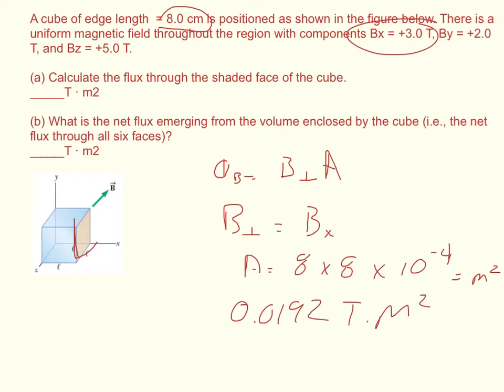Now what is the net flux emerging from the volume enclosed by the cube? So we know if we got something coming in this side, we have to have something that came in over here. So what came in on this side is negative flux. What comes out on this side is positive flux. And so if we add the net flux, the sum of all the fluxes in the cube is going to equal zero.